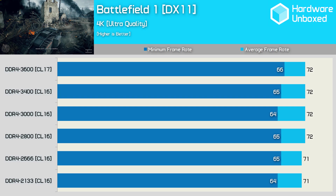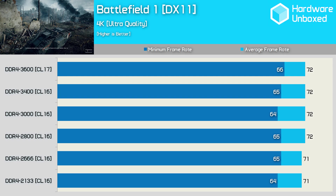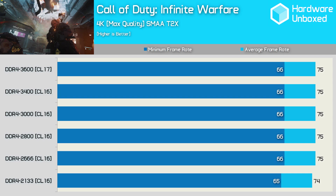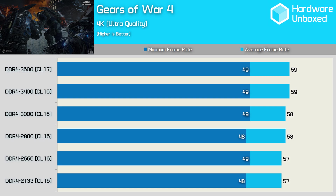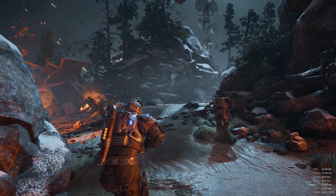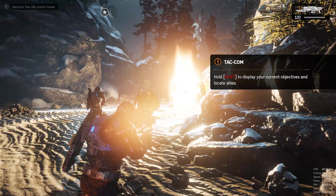These numbers look quite different to the Battlefield 1 results seen previously. At 4K with the Titan XP, we see virtually no difference in performance between DDR4 2133 and DDR4 3600. Call of Duty: Infinite Warfare has dropped down to 75 FPS and increasing the memory speed didn't improve the frame rate. Even in Gears of War 4, where we previously saw a 13% boost, we now see just a 3.5% variation at 4K. So the moment the GPU becomes the performance-limiting factor — which is almost always when gaming — increasing the CPU's memory bandwidth does little to nothing to aid system performance.